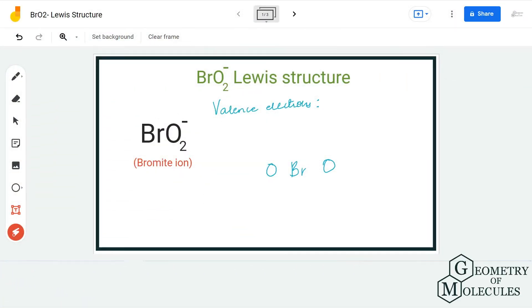Hi guys, welcome back to our channel. In today's video, we are going to do the Lewis structure for BrO2- ion. It is the chemical formula for bromite ion and comprises one bromine atom and two oxygen atoms with this additional electron.